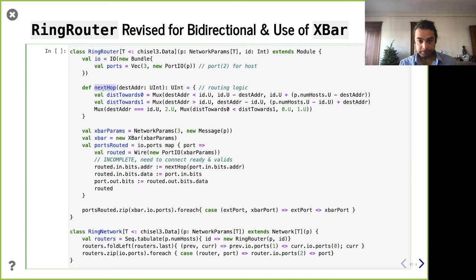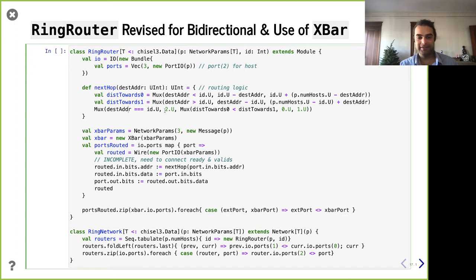The idea is: we make our routing logic and then build a crossbar, using the routing logic to choose within the crossbar what's going on. Although this is incomplete, it's not far from being complete. This is already way fewer lines of code than you'd need writing in Verilog. There's a lot going on here — handling inputs coming in, arbitrating for various ports, routing for various things. The next-hop functionality is a nice abstraction: give me a UInt, I know my ID, and I'll tell you zero, one, or two — where this needs to go. If it's two, that means it's for me (the dest address is my ID); if not, we pick zero or one — whichever direction has fewer hops — using a mux based on computed hop counts.